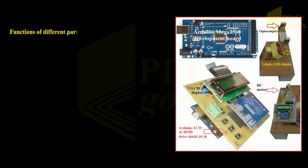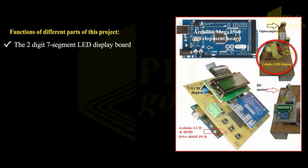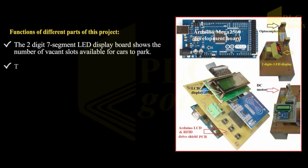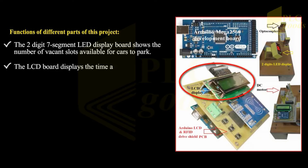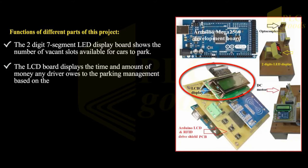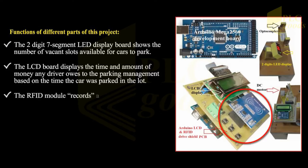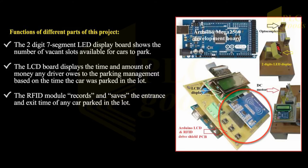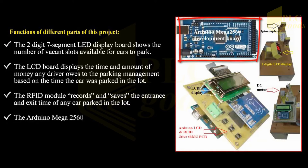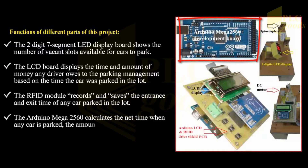Functions of the different parts of this project: The two-digit seven-segment LED display board shows the number of vacant slots available for cars to park. The LCD board displays the time and amount of money any driver owes to the parking management based on the time the car was parked in the lot. The RFID module records and saves the entrance and exit time of any car parked in the lot. The Arduino Mega 2560 calculates the net time a car is parked and the amount due from a driver.